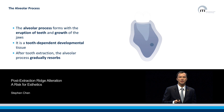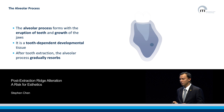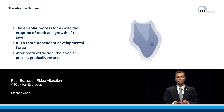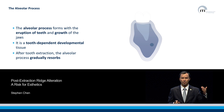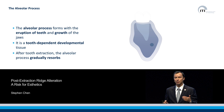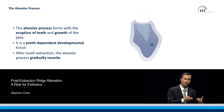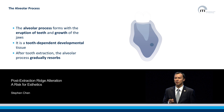Let's start by looking at healing of extraction sockets. Firstly, we need to understand and remind ourselves that the alveolar process is part of the jawbone, and it's present in dentate individuals. Whether it's a maxilla or a mandible, the jawbone consists of two parts: the basal bone and the alveolar process.